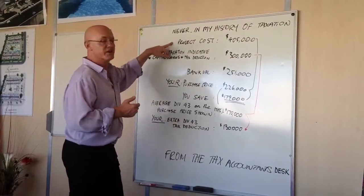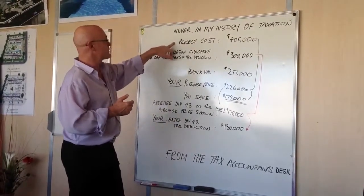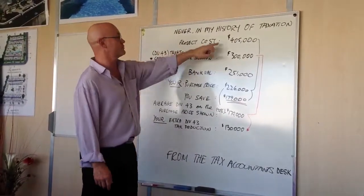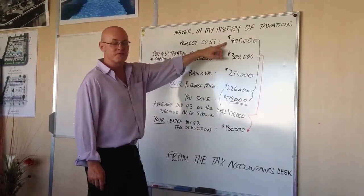we'll go through this, I'll be done in the next basically 70 seconds. We've got a project cost per unit of $405,000.